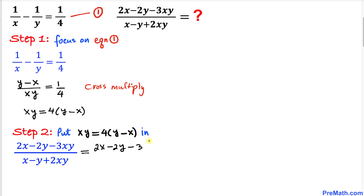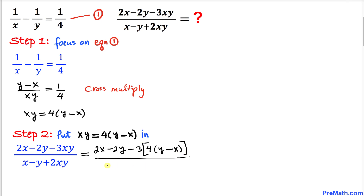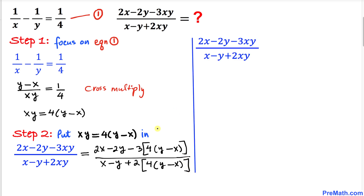So the expression becomes: 2x minus 2y stays the same, minus 3 times the bracket 4 times y minus x, divided by x minus y stays the same, plus 2 times the bracket 4 times y minus x.